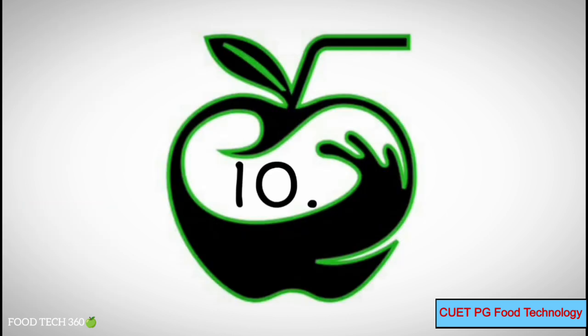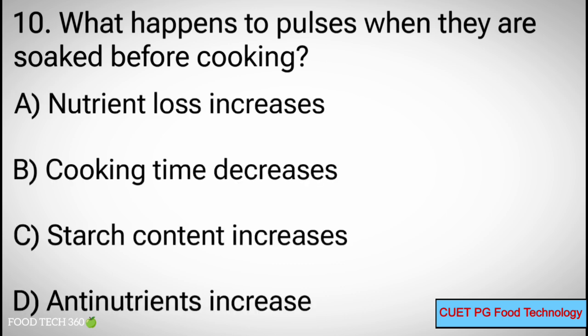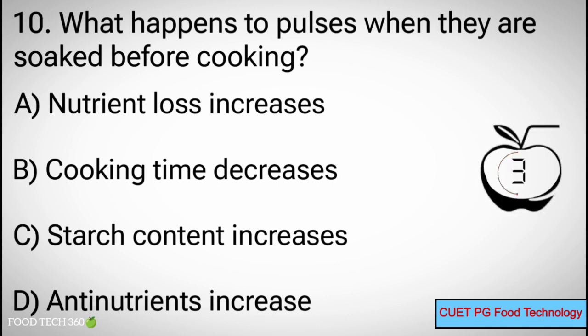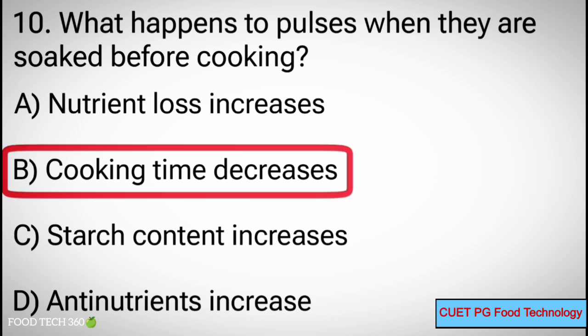Question number 10: What happens to pulses when they are soaked before cooking? Options: A. Nutrient loss increases, B. Cooking time decreases, C. Starch content decreases, D. Antinutrients increases. Correct answer: B. Cooking time decreases.